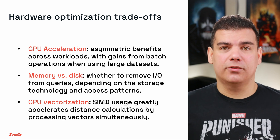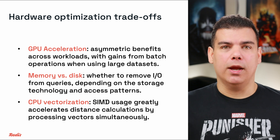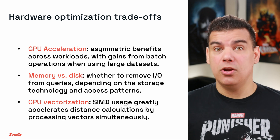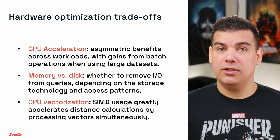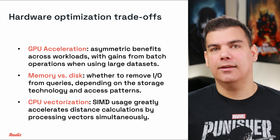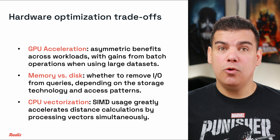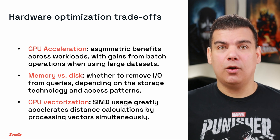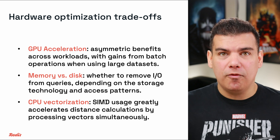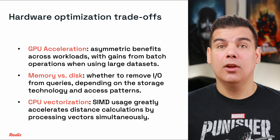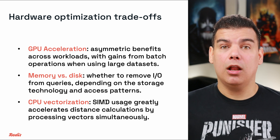Memory versus disk trade-offs present a fundamental decision point. In-memory vector search operates significantly faster compared to disk-based approaches due to the elimination of IO latency. The performance differential typically ranges from 50 to 200x, depending on storage technology and your access patterns. CPU vectorization through SIMD instructions accelerates distance calculations by processing multiple vector elements simultaneously. The theoretical performance improvement scales with the width of the vector register, up to 16x for 512-bit registers compared to scalar operations.